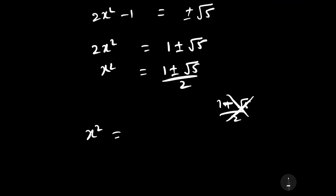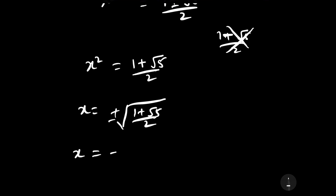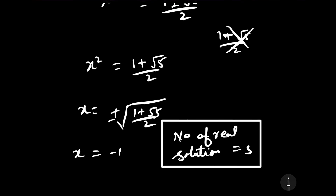So x squared equals (1 plus square root 5) divided by 2, giving x equals plus or minus square root of (1 plus square root 5) divided by 2. Together with x equals minus 1, the number of real solutions is 3. This is our required answer.